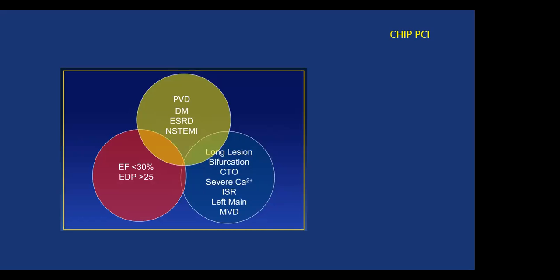Let's break it down. On comorbidities, the major ones are peripheral vascular disease, diabetes, renal failure, and acute coronary syndrome — especially non-STEMI. Hemodynamic and LV function-wise, it's ejection fraction and elevated LVEDP. From an anatomical perspective: long lesions, calcified lesions, occluded vessels, left main disease, multi-vessel disease, and in-stent restenosis.